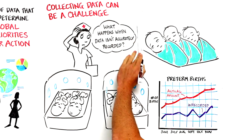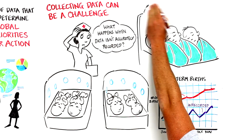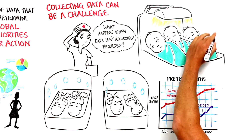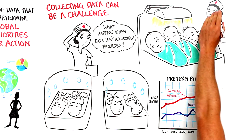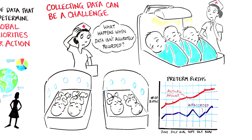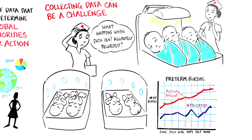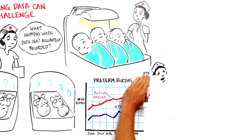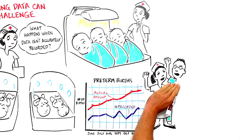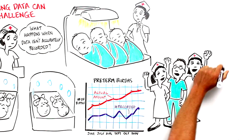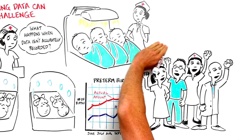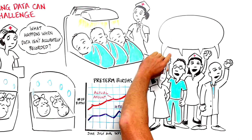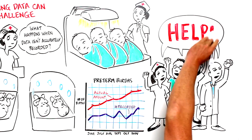So the district administrator sends resources for only 10 preterm births. Or worse, she moves resources from one facility to another, where the data shows 30 preterm births. No one ever gets the message that the facility needs help, because when the data are wrong, everything can look fine.